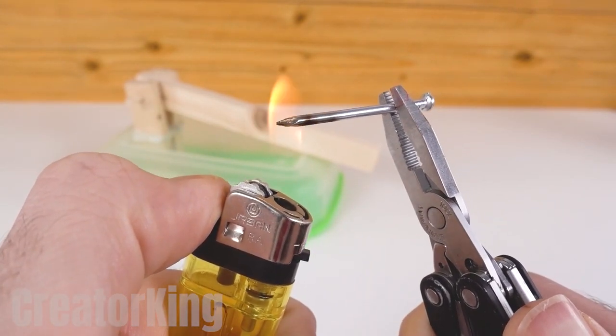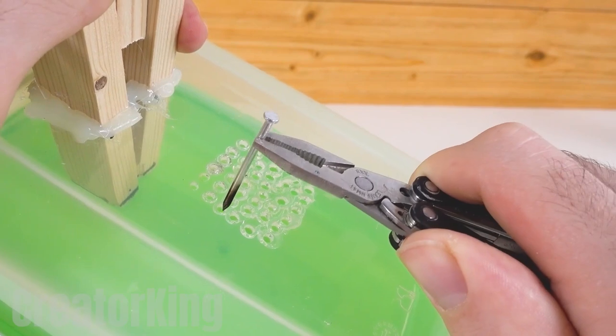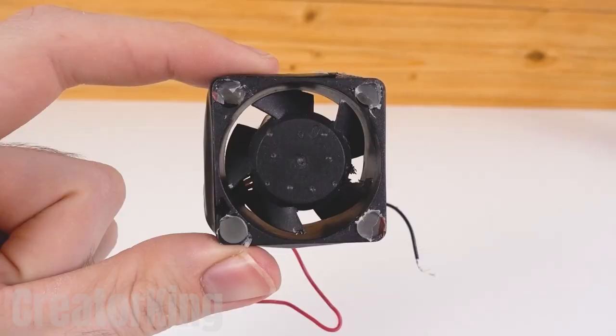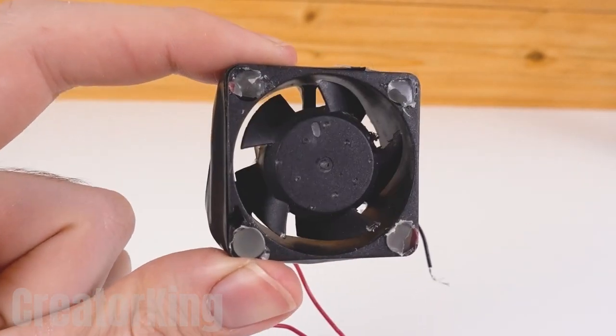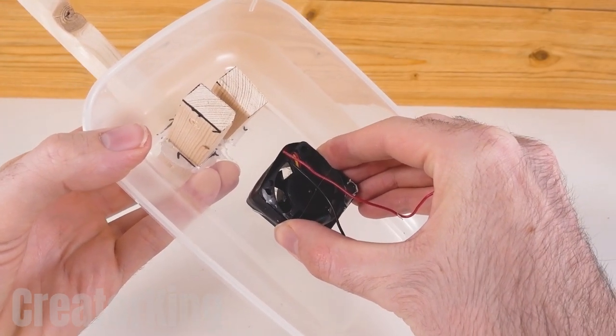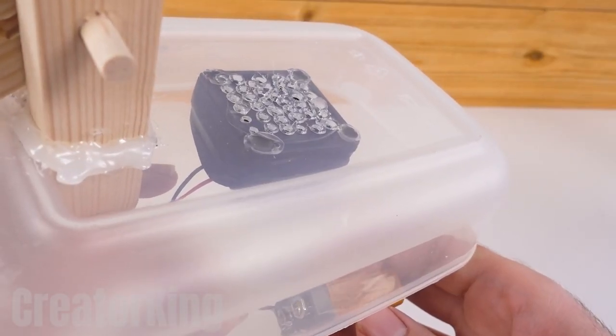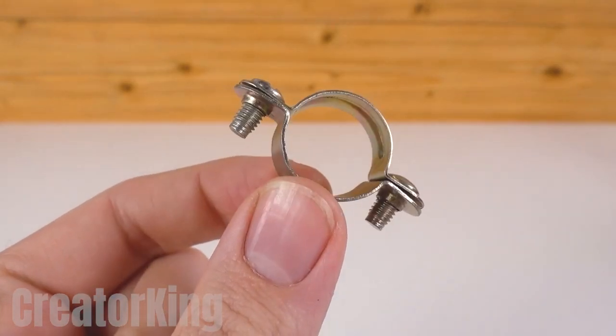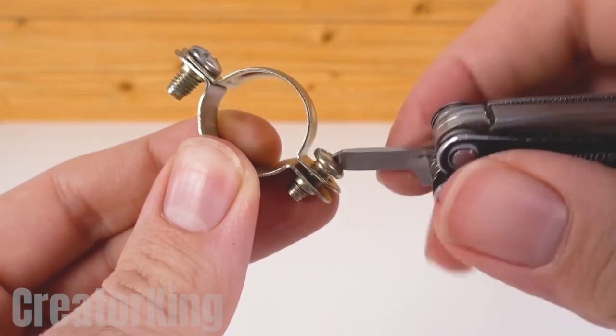With a lighter, heat a nail until it reaches a temperature hot enough to pierce the plastic container. These holes will be the air outlets for this mini computer fan which will help our invention breathe. Glue it to the inside of the container and make sure everything goes smoothly.